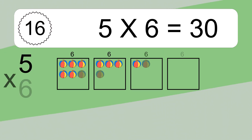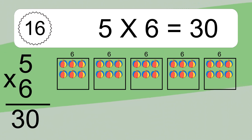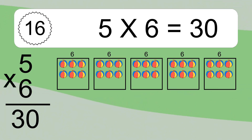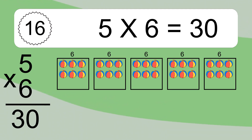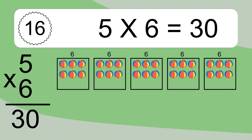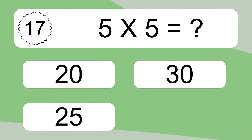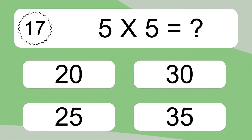5 times 6 equals what? 5 times 6 equals 30. We have 5 boxes, and each box has 6 colorful balls inside. If you count all the balls in all the boxes together, you will have 5 times 6 balls. This equals 30 balls.